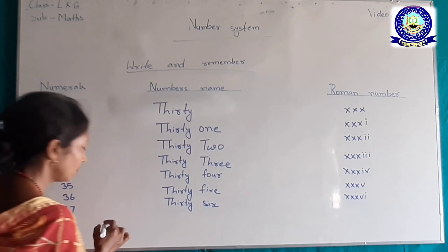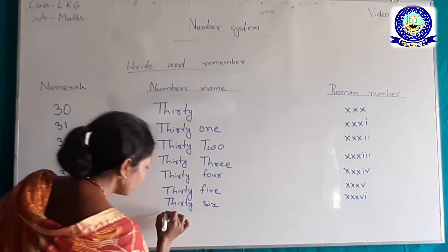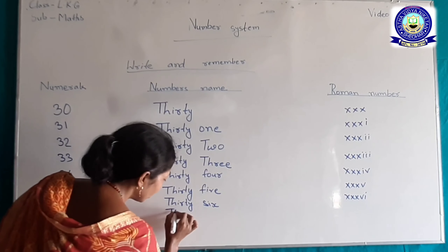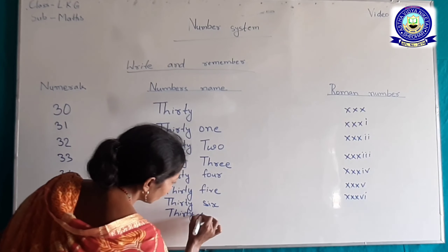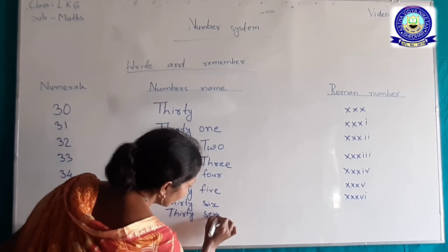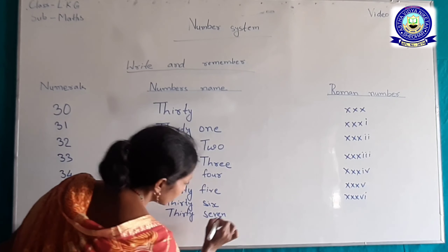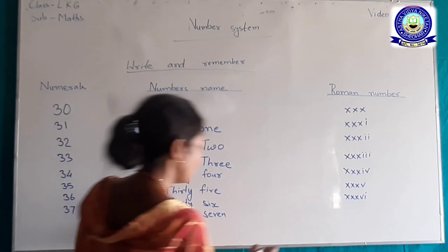37, 37। 37 का word में लिखेंगे: T-H-I-R-T-Y (30 का), S-E-V-E-N। 37 का Roman number XXXVII होगा।